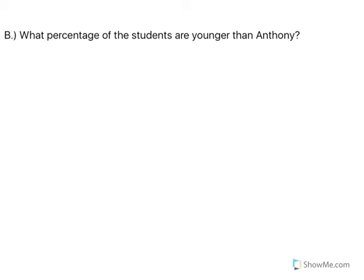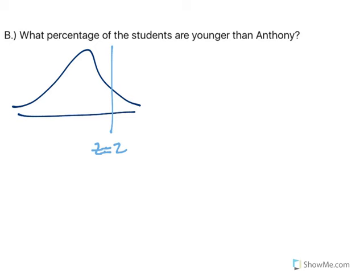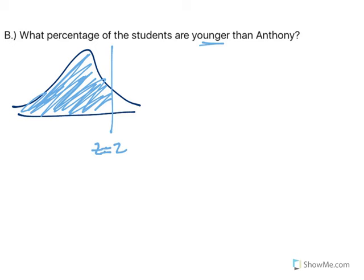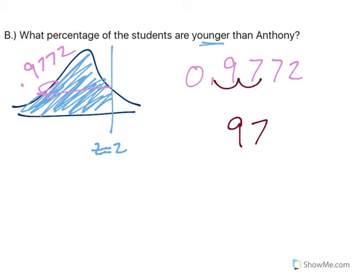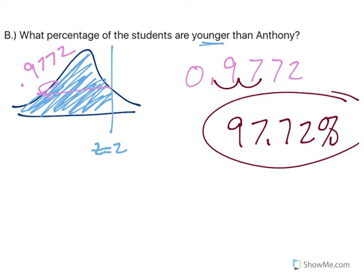What percentage of students are younger than Anthony? If Anthony's z-score is 2, he's going to be over here on the curve. Younger means to the left, so we're looking for that area. Looking at the z-score table and finding z equals 2, the table gives a value of 0.9772. Recall that the table gives you area to the left of the z-score. So converting that decimal to a percent by multiplying by 100, 97.72% of the students are younger than Anthony.